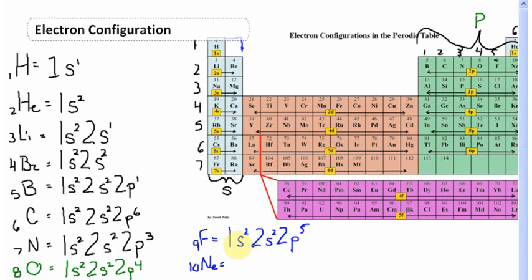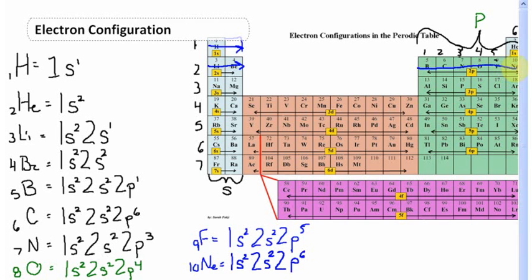The last element here is neon, which has 10 electrons. The first energy level s orbital holds two — 1s2. The second energy level s orbital holds two more — 2s2. We have six more electrons to place, and the p orbital on the second energy level holds exactly six — 2p6. Take an arrow straight through all the p columns down to neon. That takes care of energy levels one and two. Next time we'll cover energy levels three, four, and so on. Best wishes — hope this was helpful!